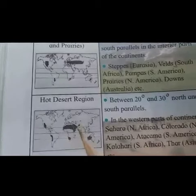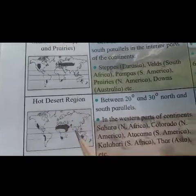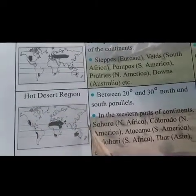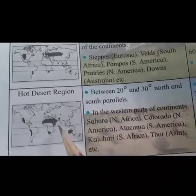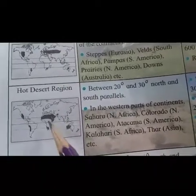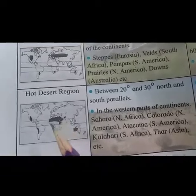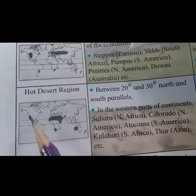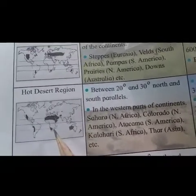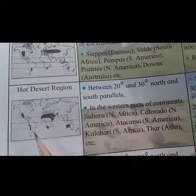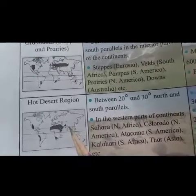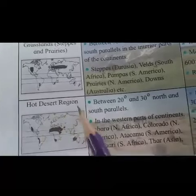The next natural region is the hot desert region. The location and extent of this region is between 20 degrees to 30 degrees north and south parallels in both hemispheres. Examples include the Sahara in North Africa, Colorado in North America, Kalahari in South Africa, Atacama in South America, and Thar in Asia.